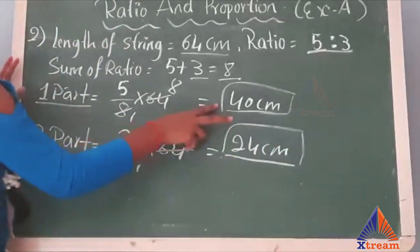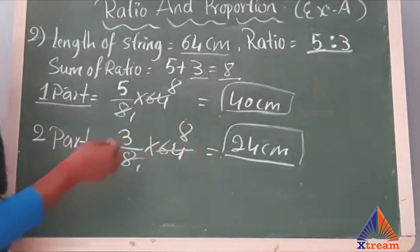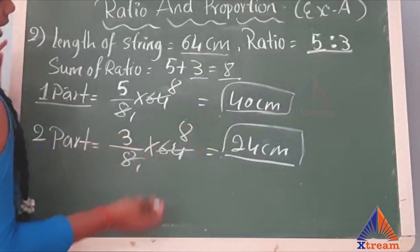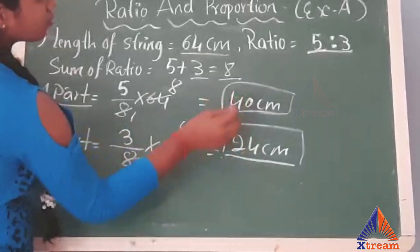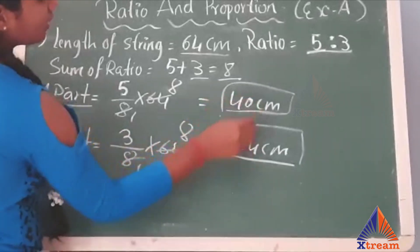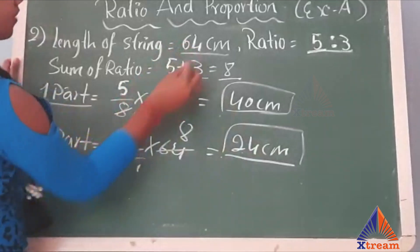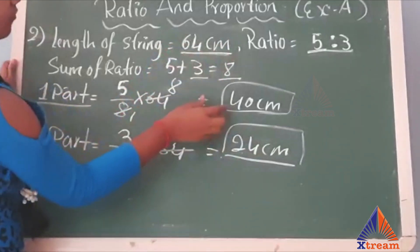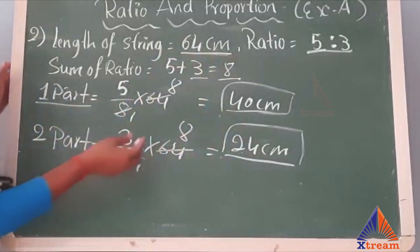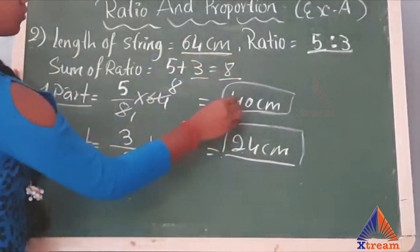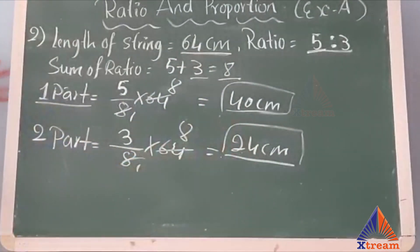These are the two parts they asked us to find. To verify whether you have got the correct answers, add the two parts: 40 plus 24 is 64. That equals the given value, which means you have got the correct answers. You can always add the two parts to recheck.